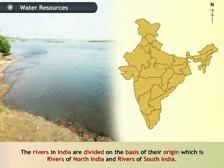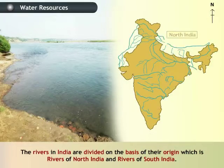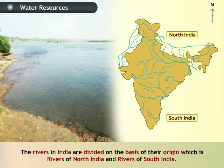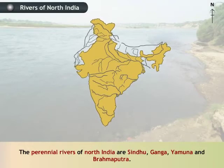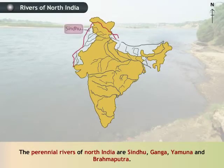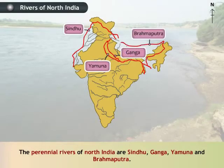The rivers in India are divided on the basis of their origin. These are rivers of North India and rivers of South India. Let's look at these rivers in detail. The perennial rivers of North India are Sindhu, Ganga, Yamuna and Brahmaputra.